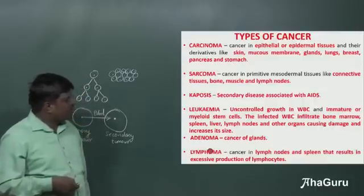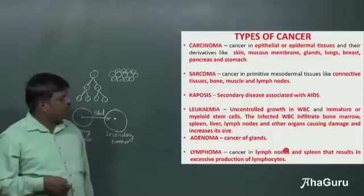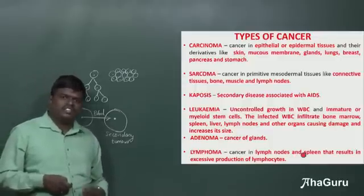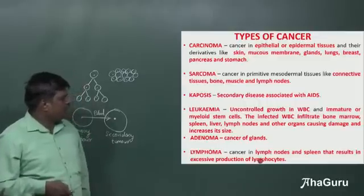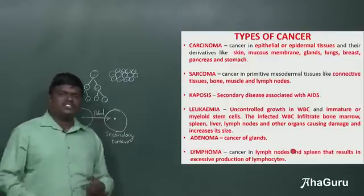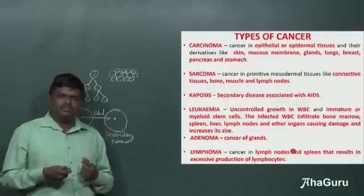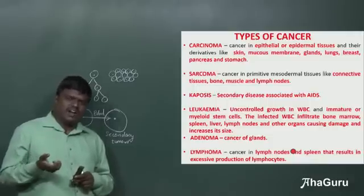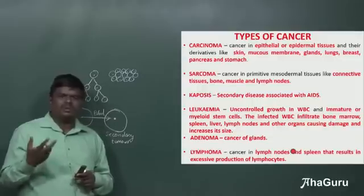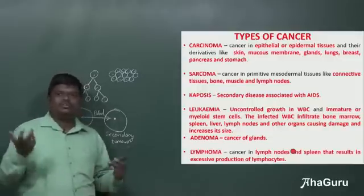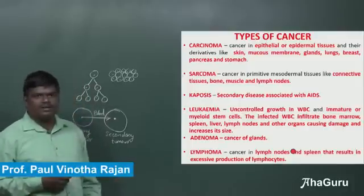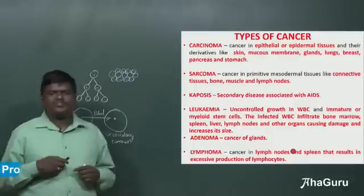Next is lymphoma. Lymphoma is cancer in the lymph nodes and spleen. Because of this, excessive production of lymphocytes takes place. Lymphocytes play an important role in the production of antibodies — T-lymphocytes and B-lymphocytes. Abnormal growth of T-lymphocytes and B-lymphocytes can take place, and that is called lymphoma. These are all the different types of cancerous cells.